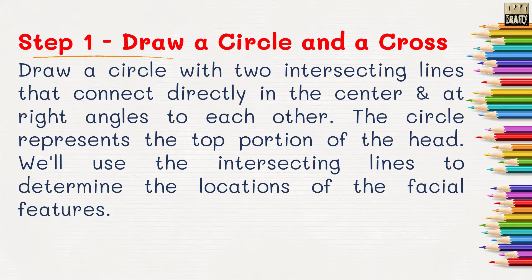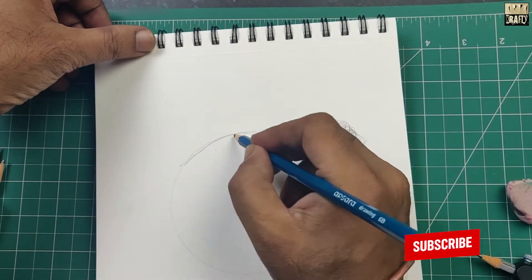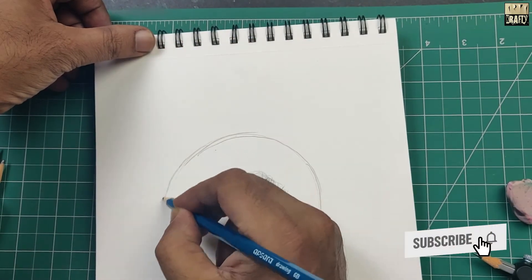Step 1. Draw a circle with two intersecting lines that connect directly in the center and at right angles to each other.